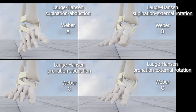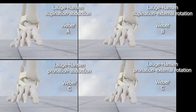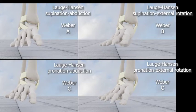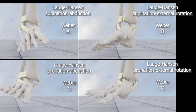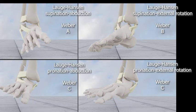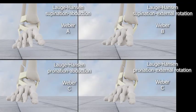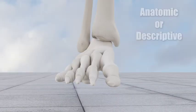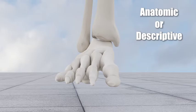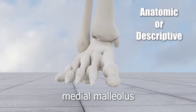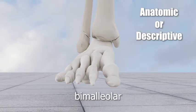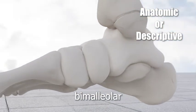A thorough grasp of these classification systems can help an orthopedic surgeon understand the dynamics involved in ankle fractures so they can be more effectively treated. However, the average healthcare provider or patient can be satisfied with a more simplified, anatomic or descriptive classification of ankle fractures. These include isolated lateral malleolus fractures, isolated medial malleolus fractures, bimalleolar fractures, and trimalleolar fractures.